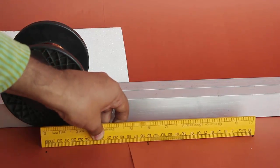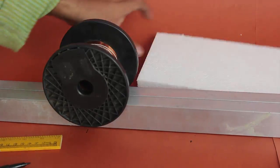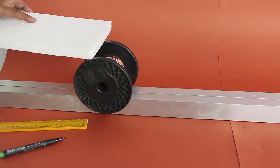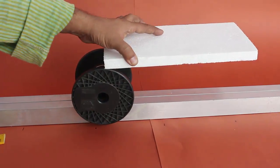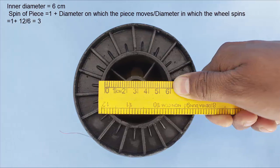Now the inner diameter of the wheel is 6 cm, outer is 12, and so the piece moves three times as much as the wheel. The formula is 1 plus diameter on which the piece moves divided by the diameter on which the wheel spins. So 1 plus 12 by 6 is 3.